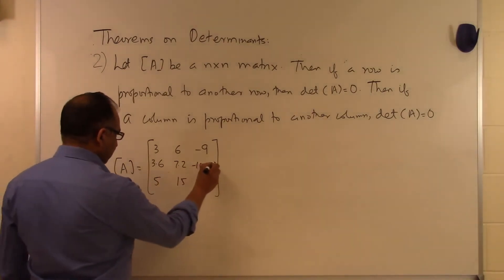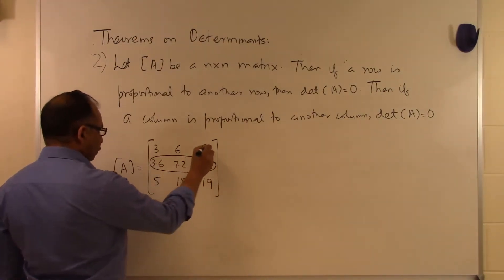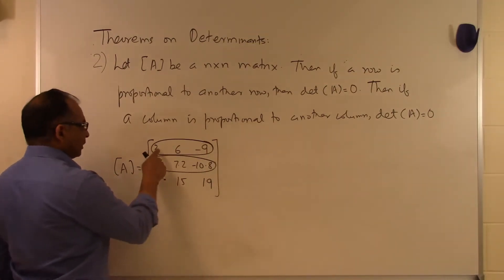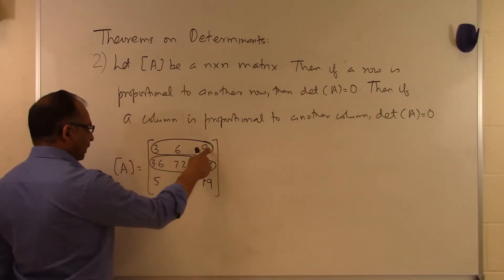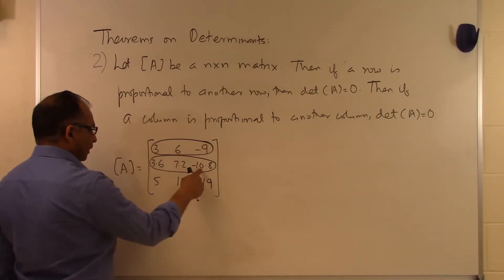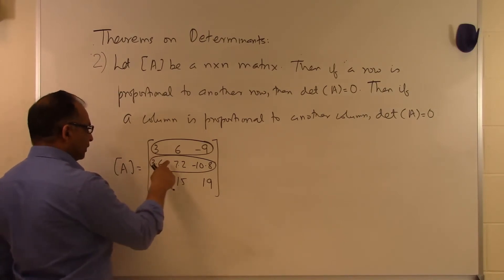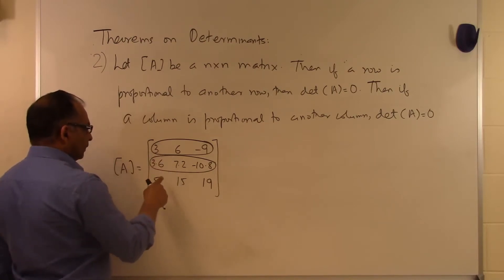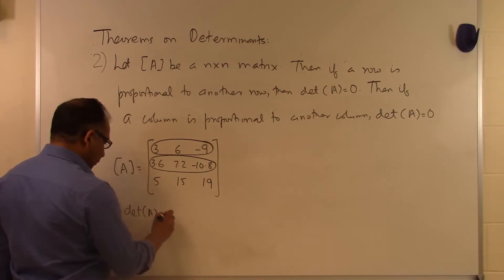You can clearly see that the second row is 1.2 times the first row: 3 times 1.2 is 3.6, 6 times 1.2 is 7.2, and -9 times 1.2 is -10.8. Since this row is proportional to another row, the determinant of A is equal to zero.